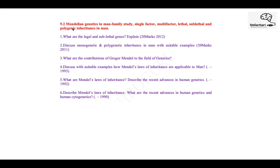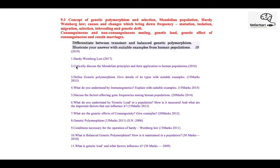Unit 9.3 covers the concept of genetic polymorphism and selection. Hardy-Weinberg law, and the causes of changes in gene frequency — mutation, isolation, genetic drift, inbreeding — are all terms you have gone through in detail in the evolution units. A question asks: differentiate between transient and balanced genetic polymorphism and illustrate with an example. Hardy-Weinberg law is a direct question in 2017. Mendelian principles and their application is another direct question. There is also: what is genetic polymorphism — describe its types with suitable examples.